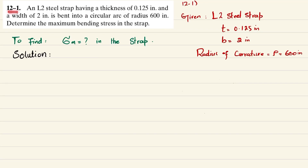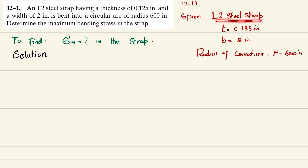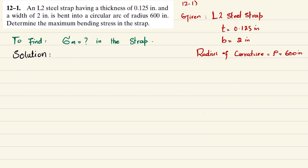Welcome back. Problem 12-1: An L2 steel strap having a thickness of 0.125 inch and a width of 2 inch is bent into a circular arc of radius 600 inch. Determine the maximum bending stress in the strap. You can see the strap here — thickness and width are labeled, and the radius of curvature is 600 inch.